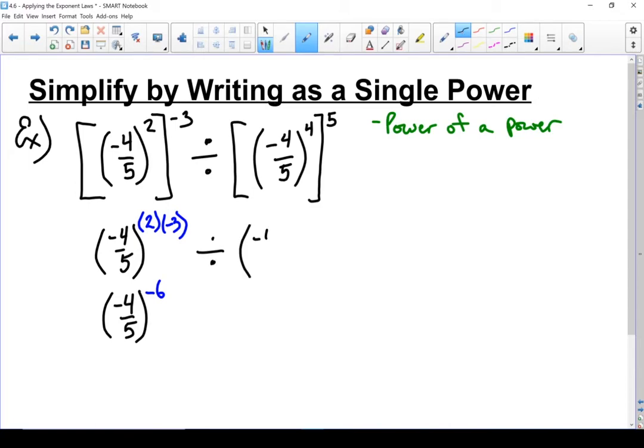Let's go back to the other side. Still have that four-fifths base. In this case, my exponents are 4 times 5. Base stays the same. Four times 5 gives me 20.